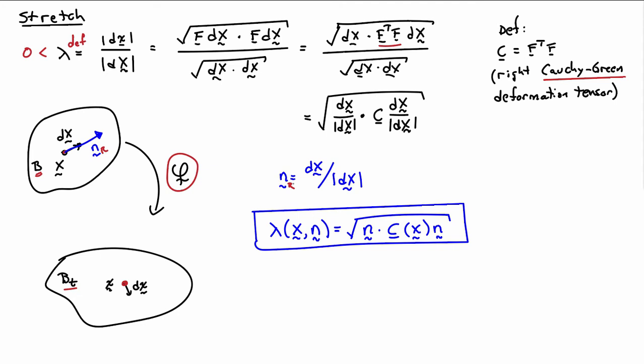And so we get a final expression for the stretch. It depends on the location, capital X, and it depends on this direction, let's say NR. And it's the square root of NR dotted with C acting on NR. So we pick a direction in the reference body, pick a point. If we know the deformation map, then we can calculate the deformation gradient, which means we can calculate the right Cauchy Green deformation tensor. And then we can execute this operation here, sandwich it between the direction vector that we're interested in, take the square root, that will give us the stretch.